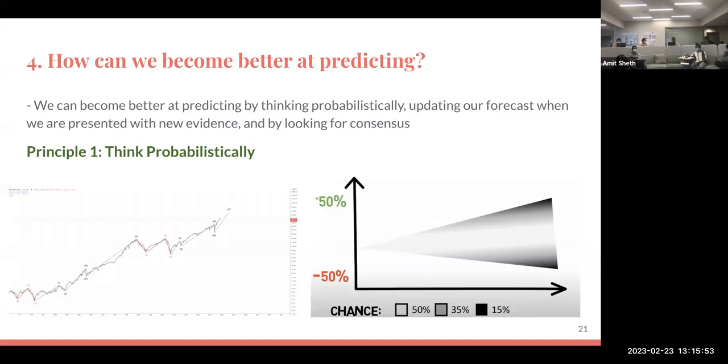Fourthly, this book tells about how we can become better at predicting. He underlines three principles. The first one is we have to think probabilistically. This left side graph includes a prediction done by the S&P 500 company, but it's not probabilistic. He says that whenever we make a prediction, we should not make point and deterministic forecasts. We should make our forecast probabilistically, which means we should produce a range of possible outcomes.